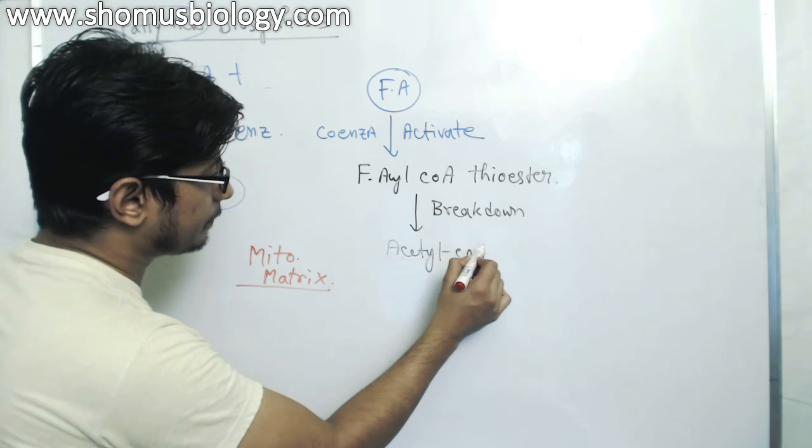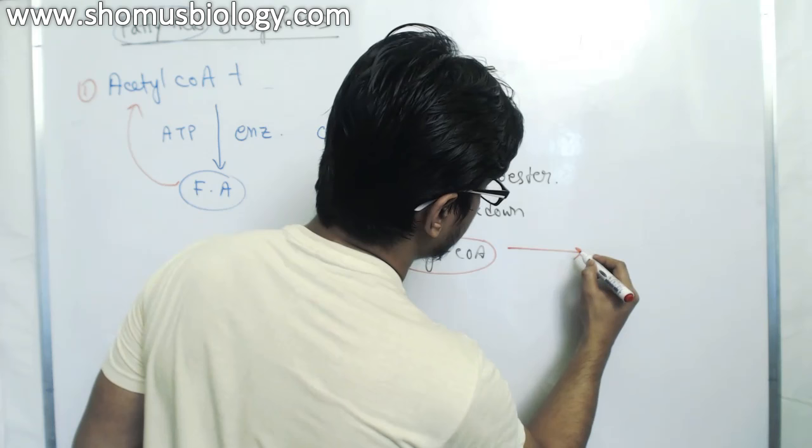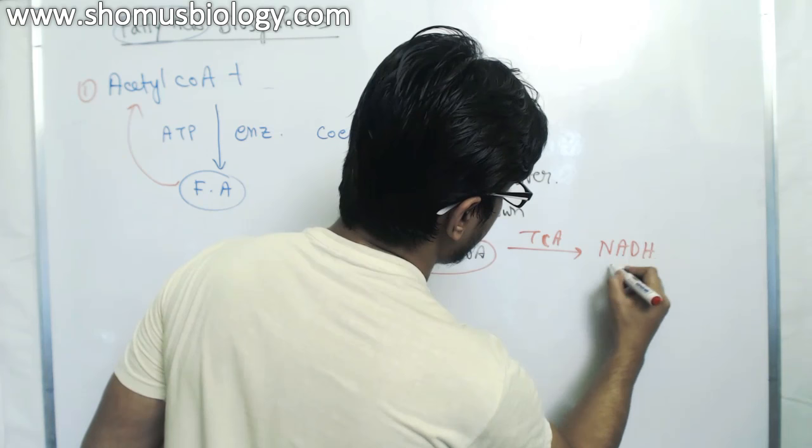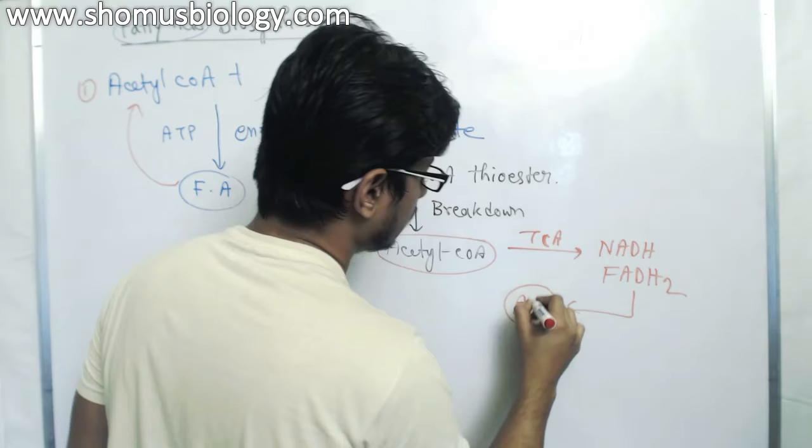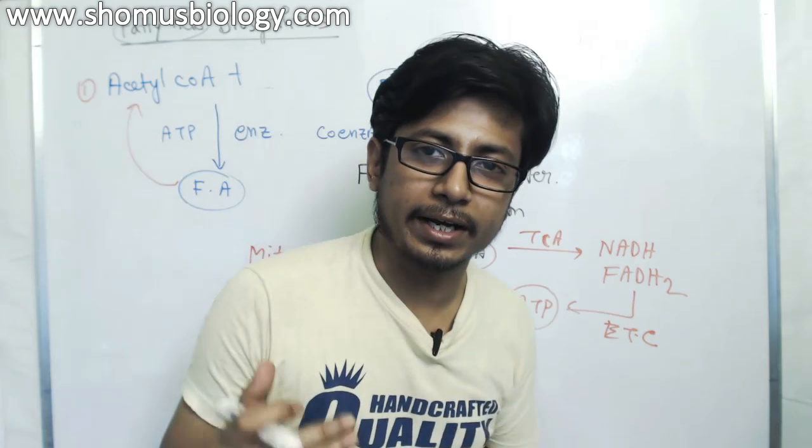Matrix of mitochondria. The reason for that, you know, the ultimate breakdown product of fatty acid beta-oxidation is acetyl-CoA, which should be required inside the mitochondria in the matrix for utilization in the TCA cycle. At the end, it will produce NADH and FADH2 that will give us a lot of energy throughout the process of electron transport chain.